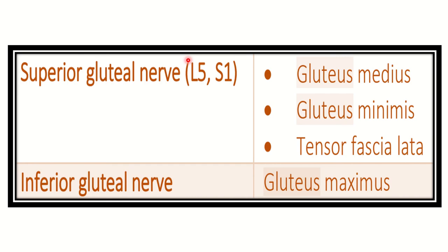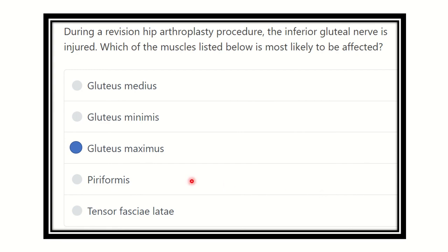The superior gluteal nerve has roots L5 and S1 and supplies gluteus medius, gluteus minimus, and tensor fascia latae. The inferior gluteal nerve supplies only one muscle, but the biggest in the hip area — the gluteus maximus. So the inferior gluteal nerve is not inferior in importance; it supplies the largest muscle. Piriformis is not supplied by either of these nerves; it receives its supply from other areas.